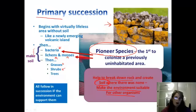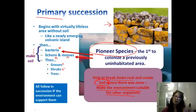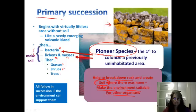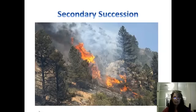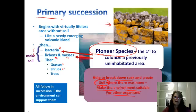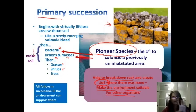So all of these things — from the bacteria to the lichens, to the grasses, to the shrubs, to the trees — all follow one after the other as long as the environment can support them. That's primary succession, where we have just barren rock that we didn't have before.